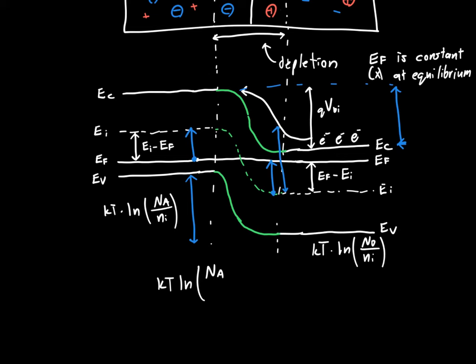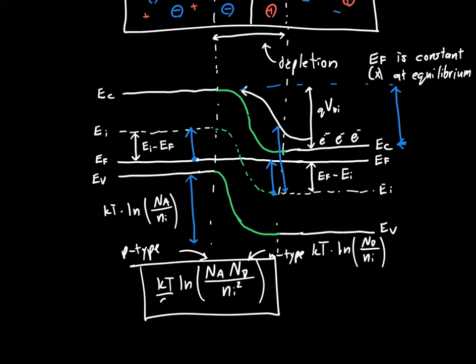That's just NA, which is the doping concentration of the P-type semiconductor, times ND, which is the doping concentration of the N-type semiconductor, divided by NI-squared. And so this is, and if we want, instead of an energy, if we want a voltage, this is VBI. So this quantity is incredibly important in semiconductors. And it's typically given as around 0.7 volts for silicon diodes. If you've ever done any circuit analysis, this is where that 0.7 volts comes from.